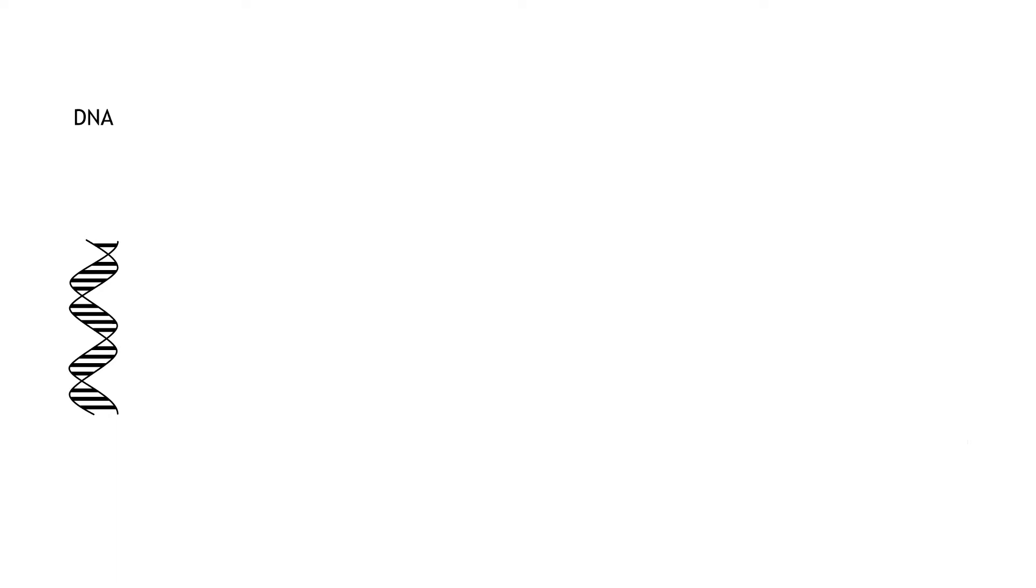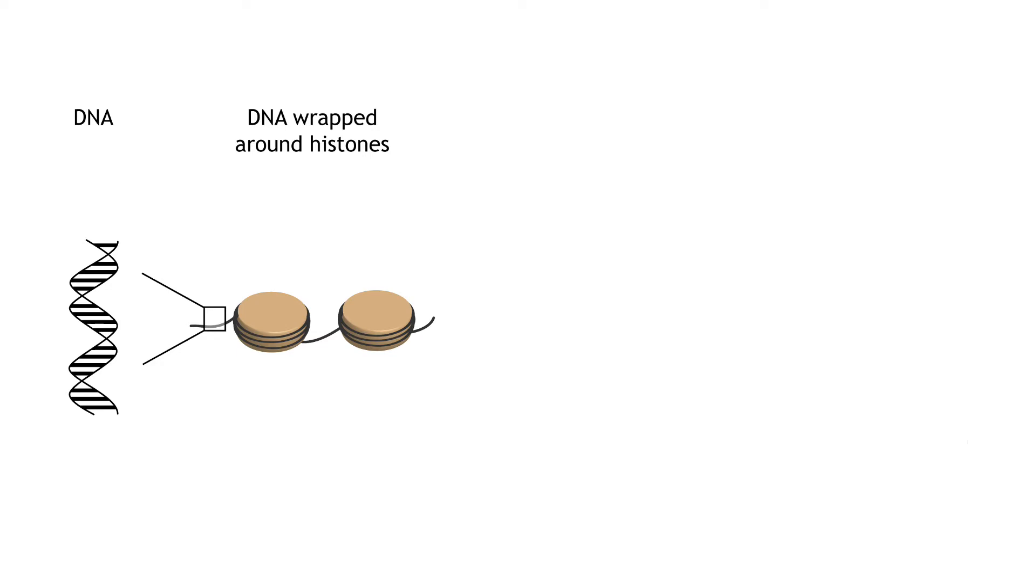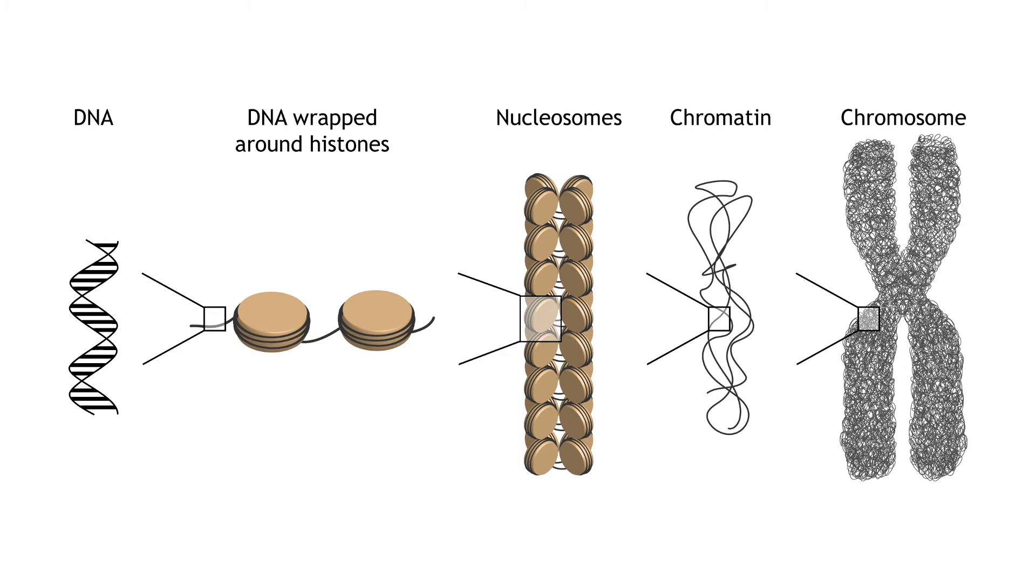The double helix is wrapped around proteins called histones. The histones are then wrapped into nucleosome strands. The nucleosomes are compacted into denser structures called chromatin, and finally, the chromatin is condensed more and creates chromosomes.